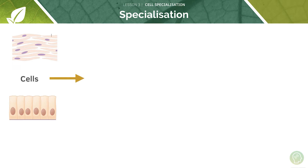Cells develop as the organism does. Cells are adapted to perform specific functions and these cells can work alone or they can work with other specialised cells to make a tissue. Specialised cells working with tissues make an organ, and organs can work together to make an organ system.